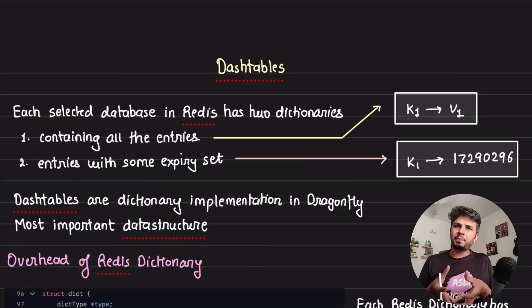DragonflyDB is a drop-in replacement for Redis, but instead of using regular hash tables to hold data, it uses something called dash tables which are 4-15 times faster. This is the fourth video in the DragonflyDB internal series. Let's start with understanding how Redis stores data.